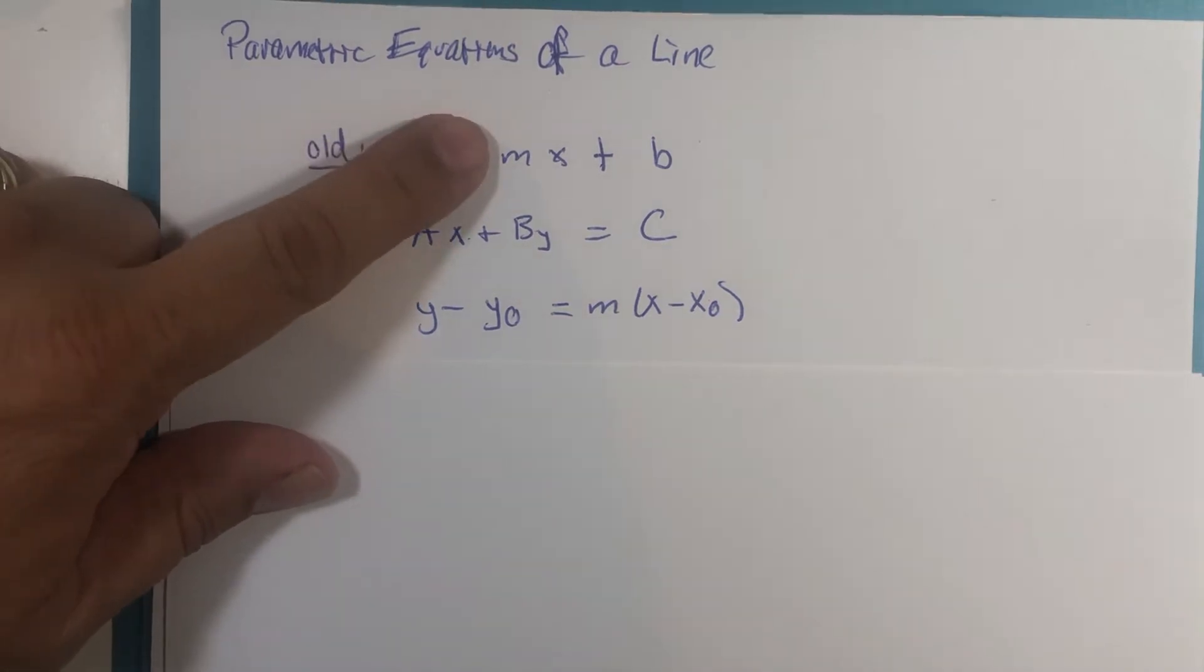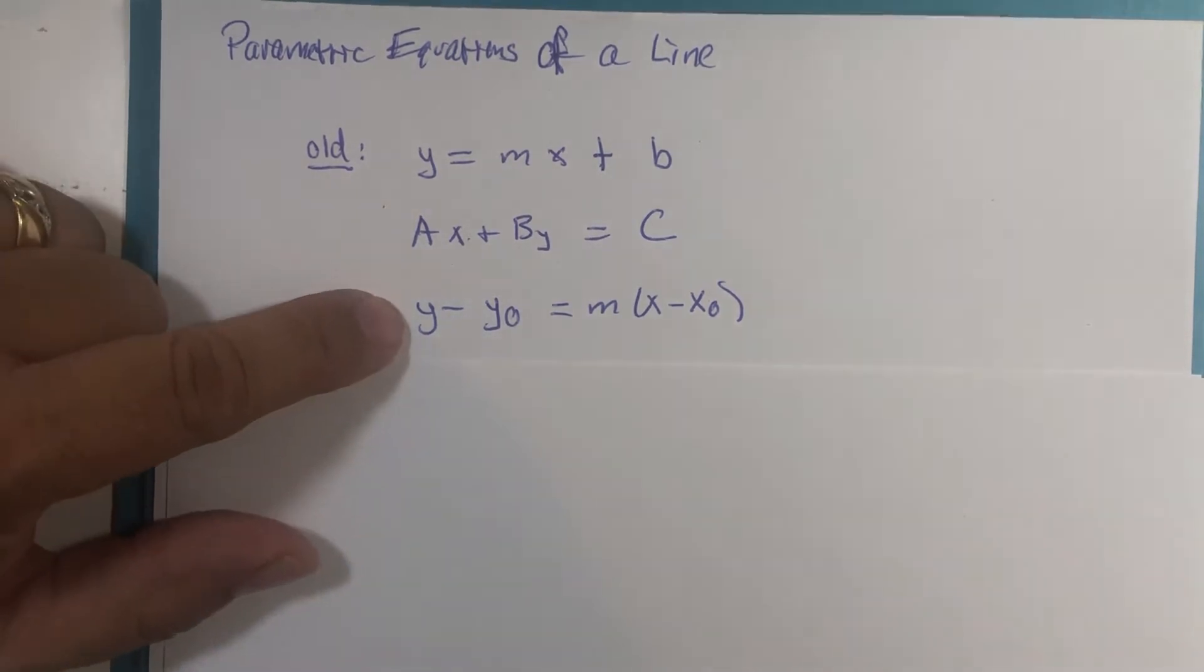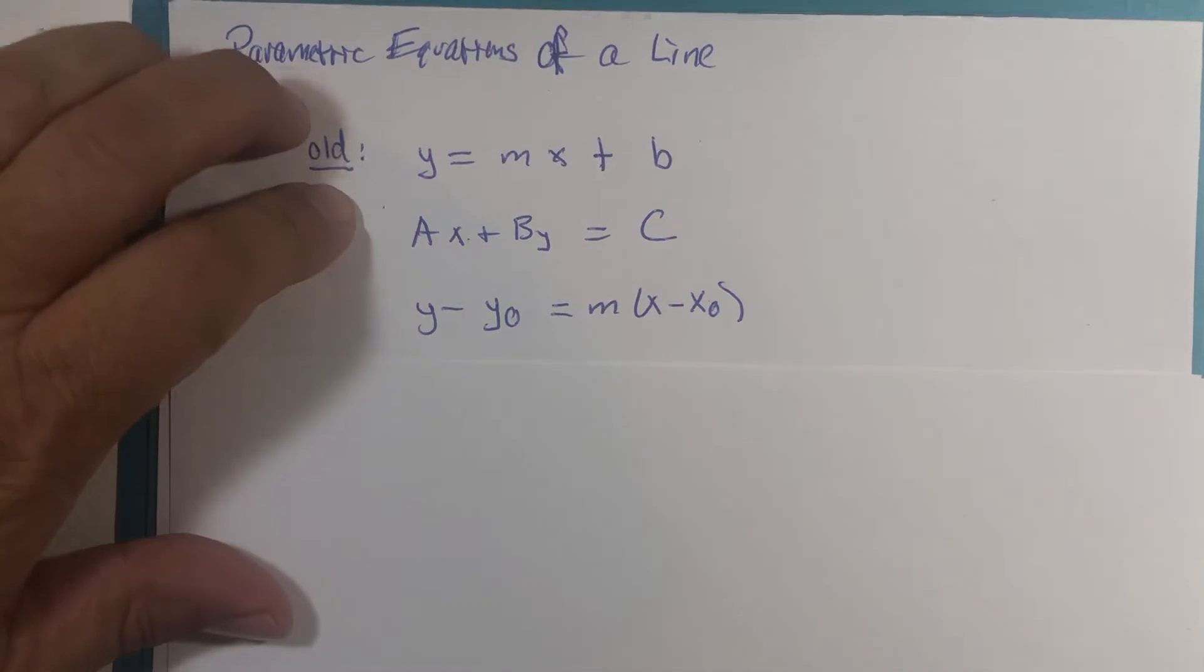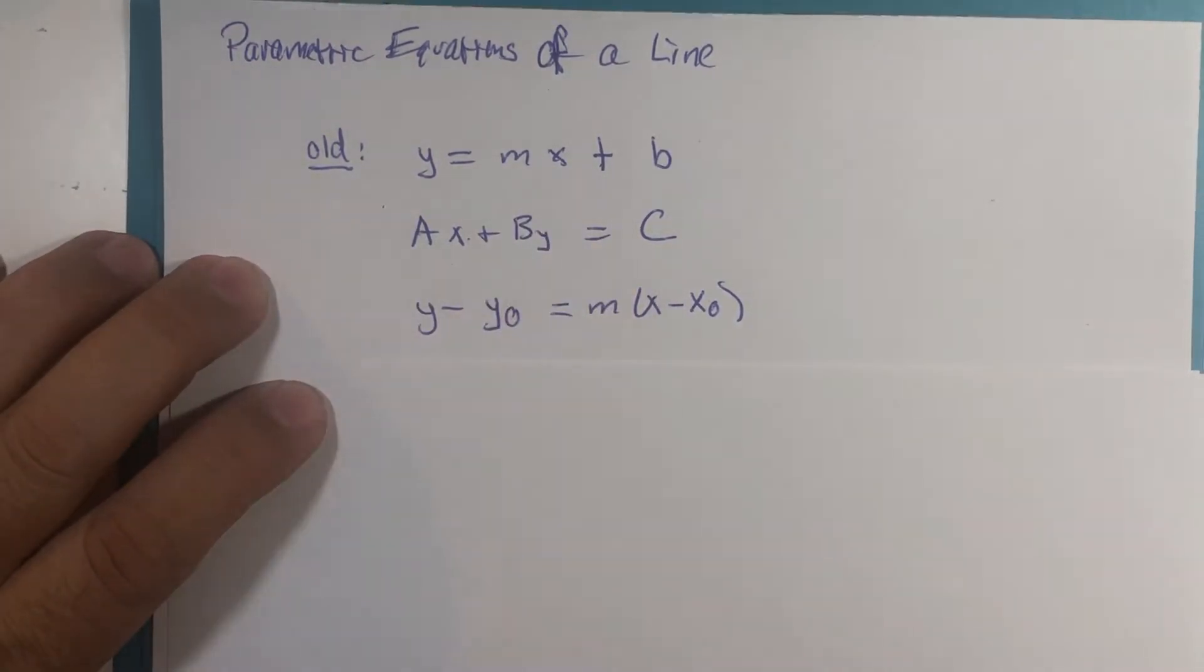If you're in a statistics class this might be organized differently. This is sometimes called the standard equation of the line, Ax + By = C, sometimes called the general equation of the line. This here is an equation of line where you just need to know any given point and the slope, y - y₀ = m(x - x₀).